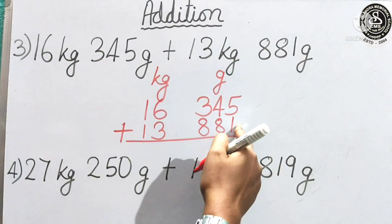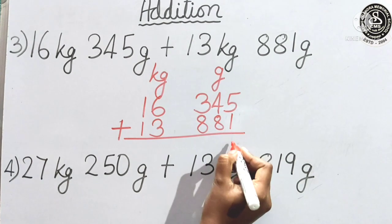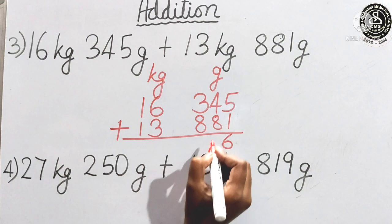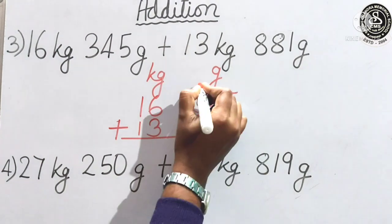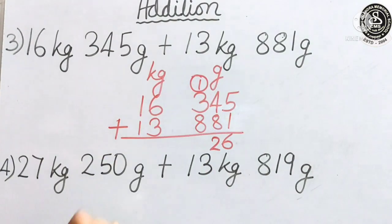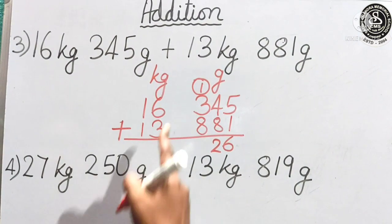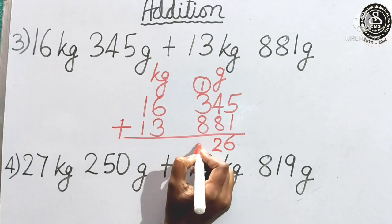5 plus 1 and we will give the plus sign also. Now, 5 plus 1 we will start from this side. 6. 4 plus 8. What we get? 12. Now, again carry over. We will borrow here. Now, 3 plus 8. 11. Carry 1. We will add 12.